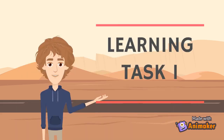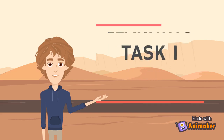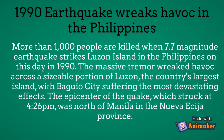Let's do Learning Task number one. Read the article about the earthquake that happened in Luzon in 1990 and answer the questions briefly. More than 1,000 people were killed when a 7.7 magnitude earthquake struck Luzon Island in the Philippines in 1990. The massive tremor wreaked havoc across a sizable portion of Luzon, the country's largest island, with Baguio City suffering the most devastating effects. The epicenter of the quake, which struck at 4:26 p.m., was north of Manila in the Nueva Ecija province.